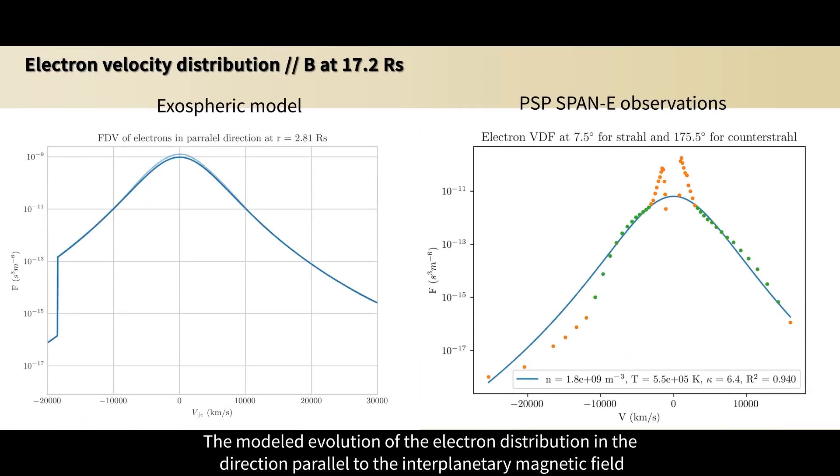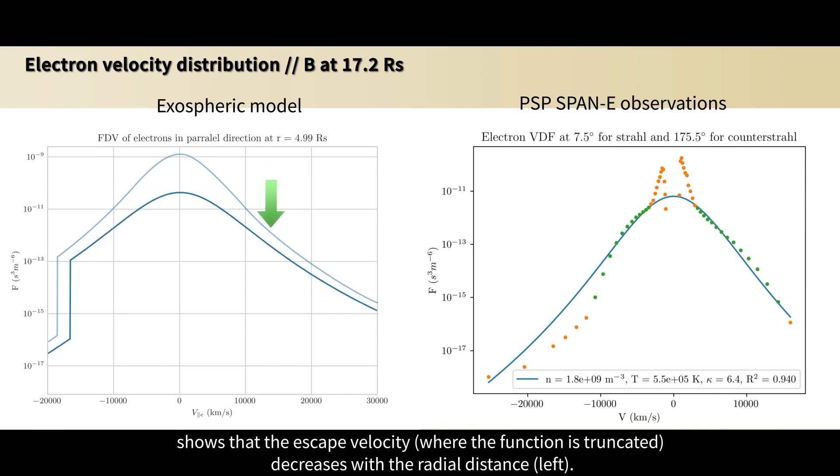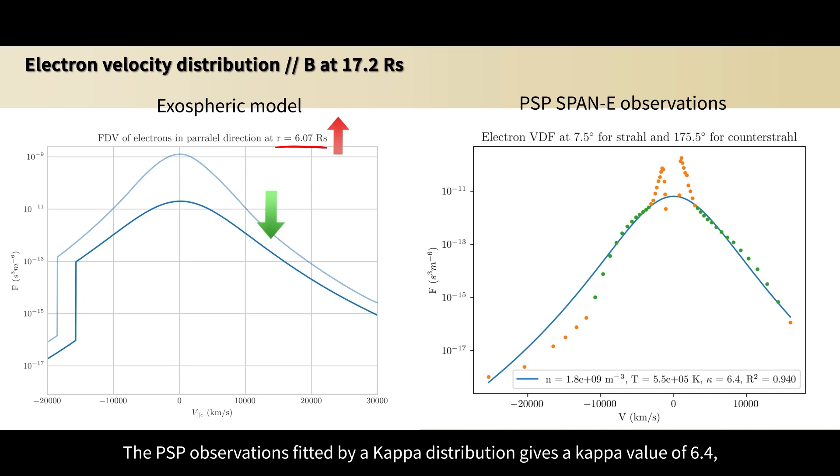The modeled evolution of the electron distribution in the direction parallel to the interplanetary magnetic field shows that the escape velocity decreases with the radial distance. The PSP observations fitted by a kappa distribution gives a kappa value of 6.4, showing the presence of superthermal strahler electrons.